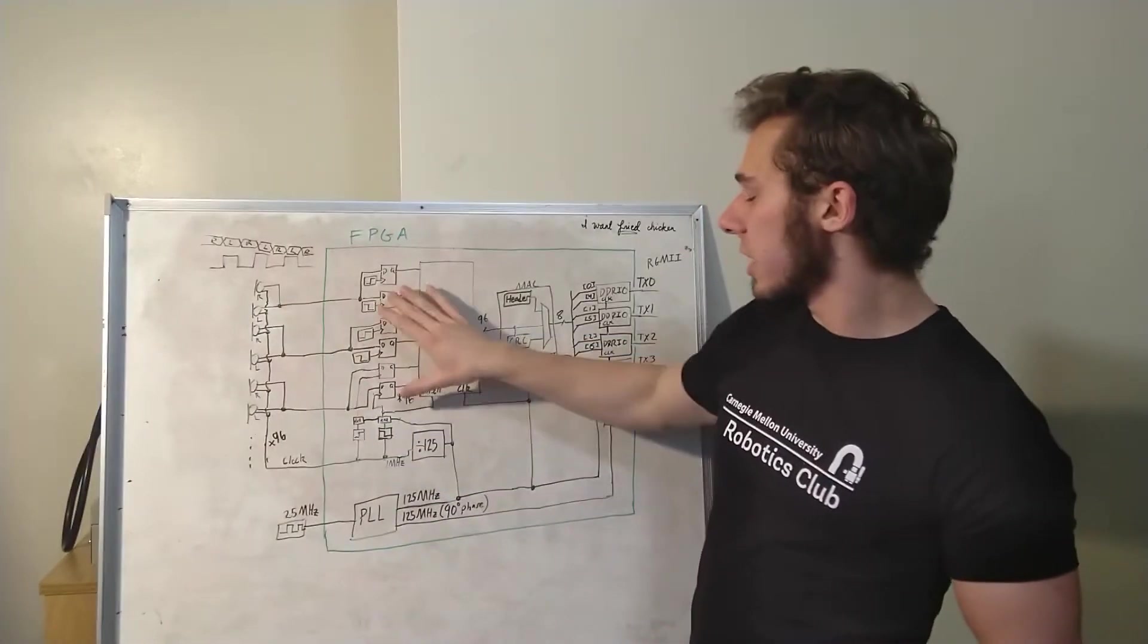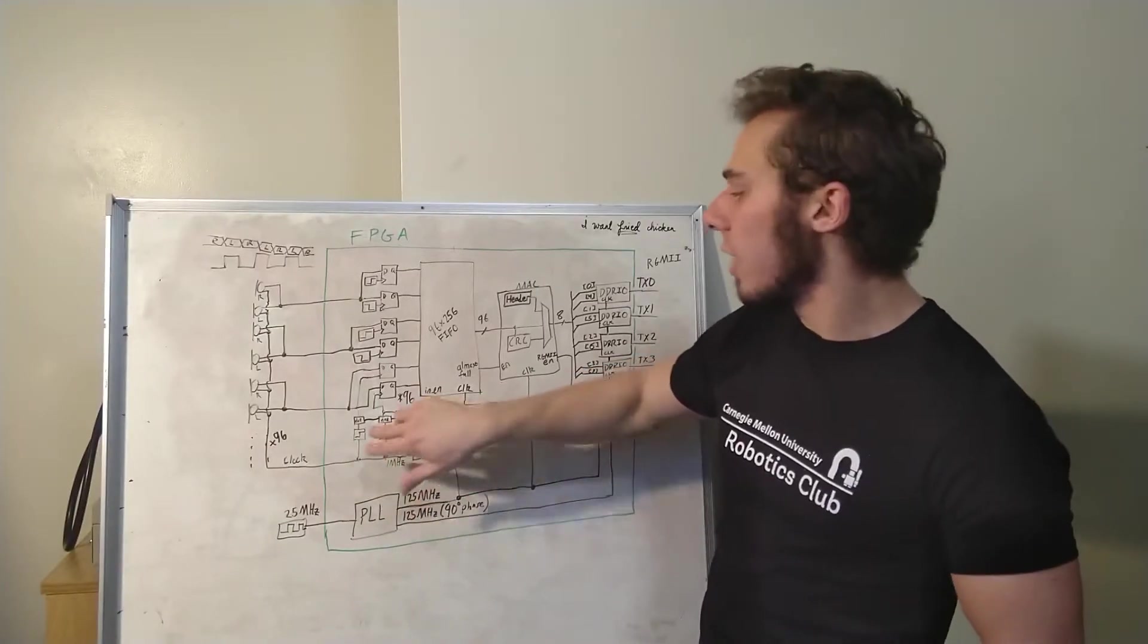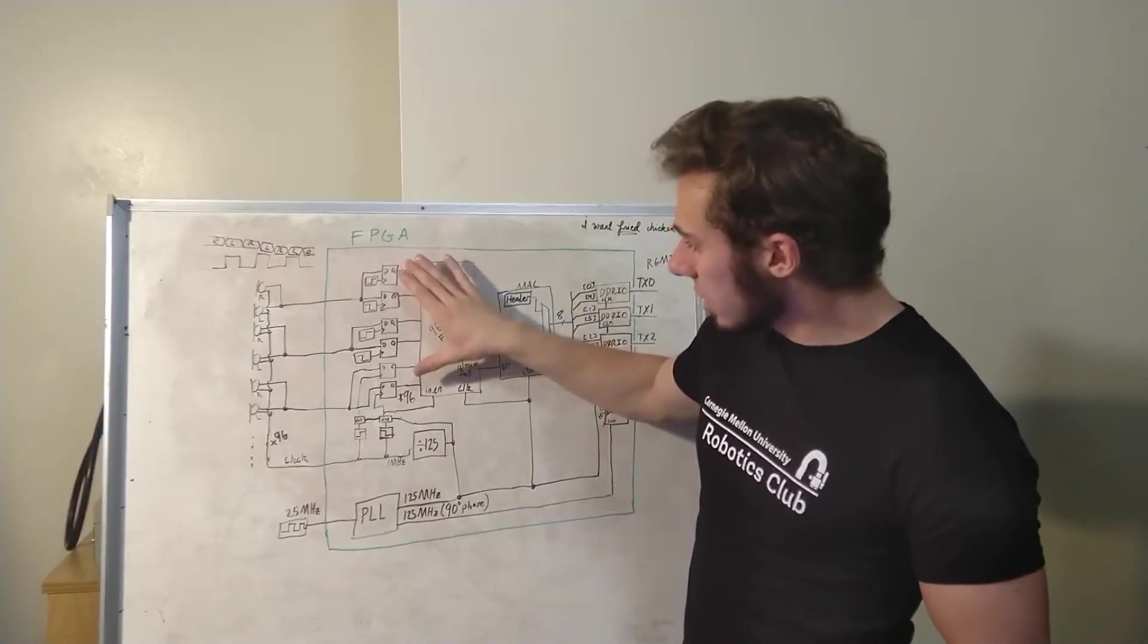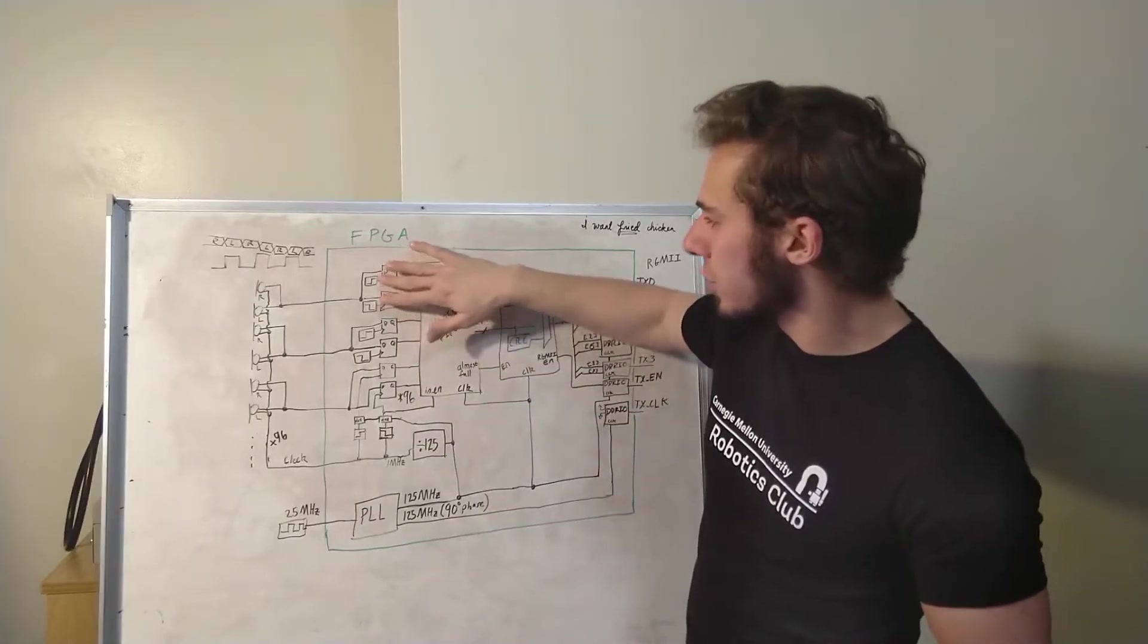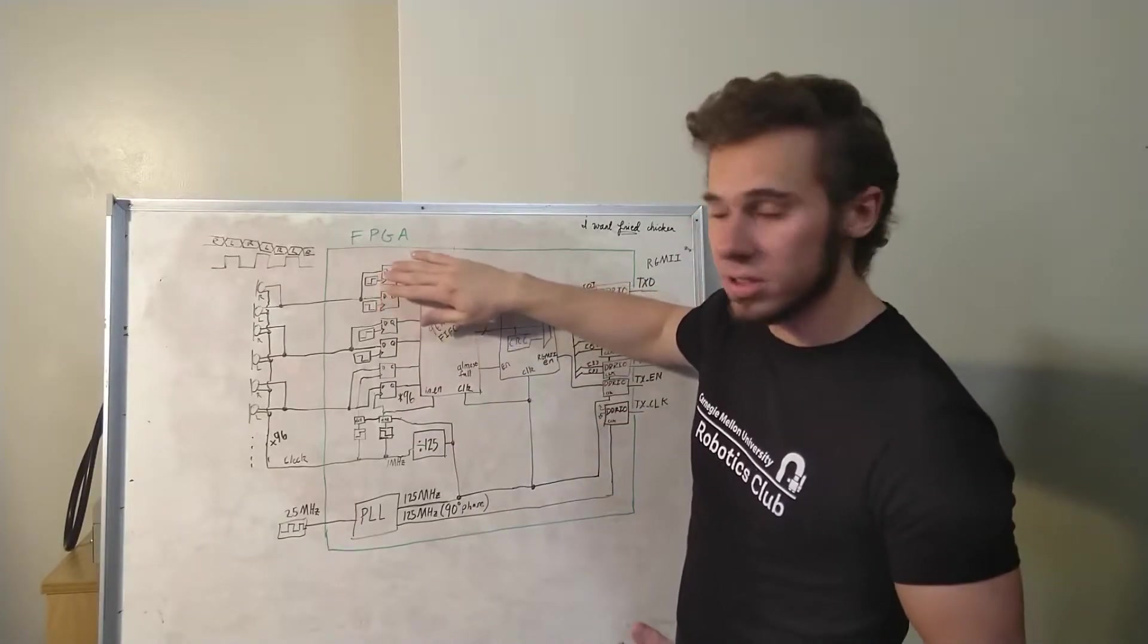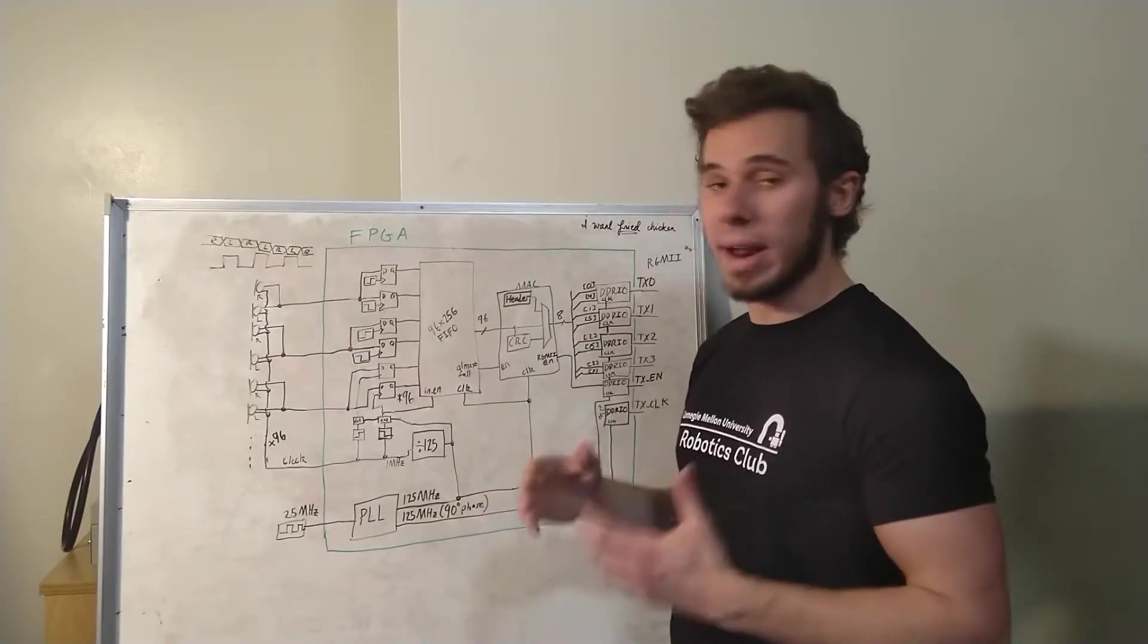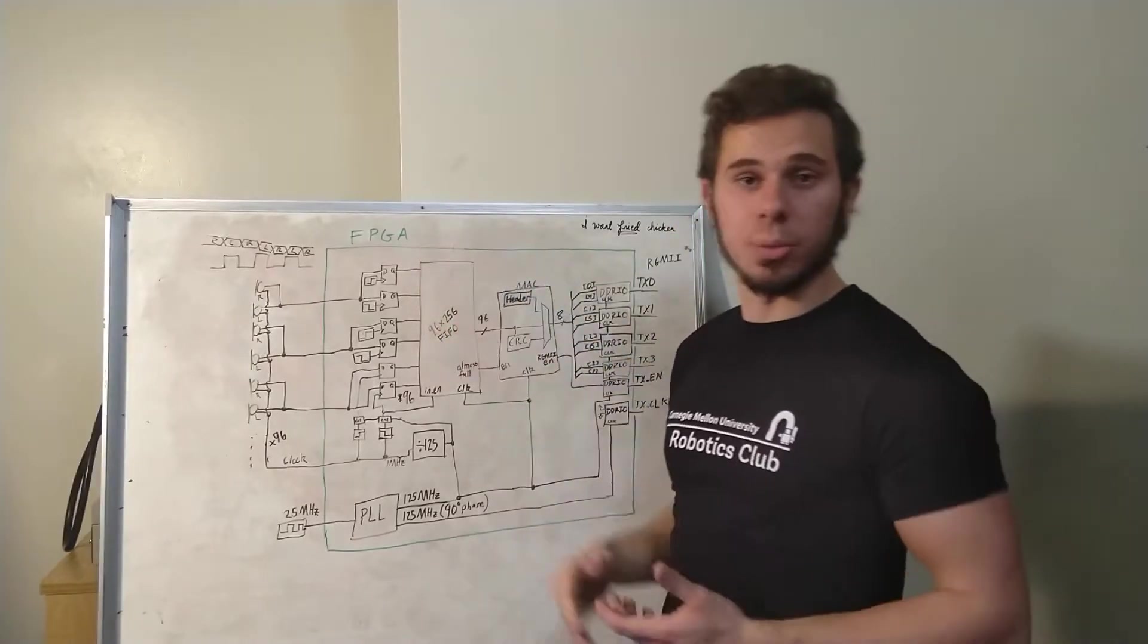These outputs then come into the FPGA and we use a rising and falling edge detector on the 1 megahertz clock, as well as a small delay, combined with 96 registers, one for each microphone, which alternatively trigger on the positive and negative edges to get all 96 microphone data outputs on 96 separate outputs from the registers.